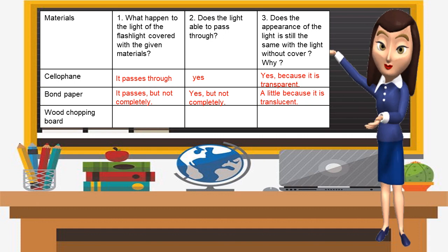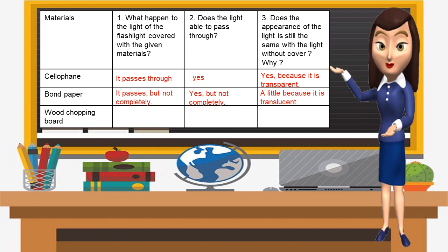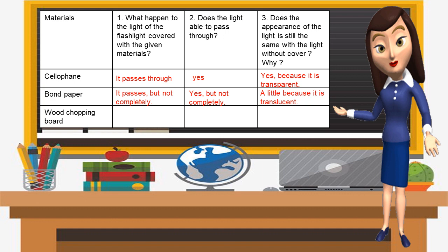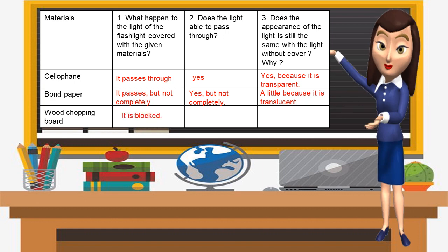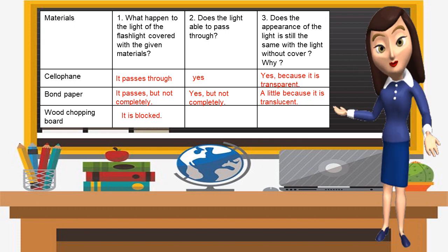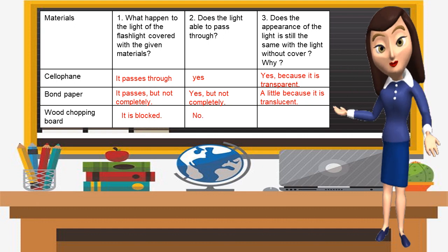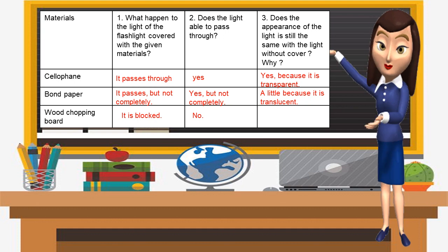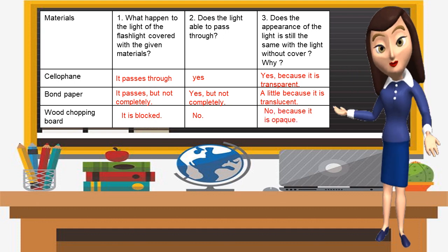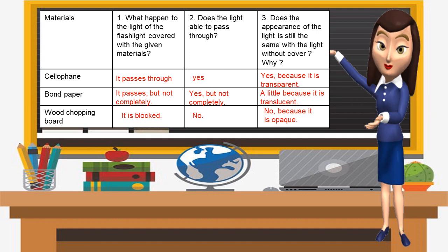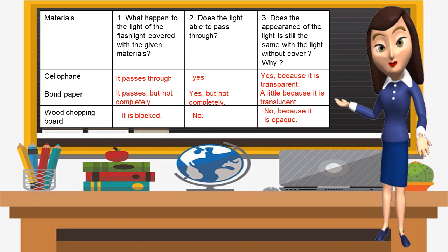Now let's go to wood. What happened to the light of the flashlight covered with wood? It is black — the light is black. Does the light able to pass through? No. Does the appearance of the light look the same? No, because it is opaque. So the wood is opaque — it blocks light.